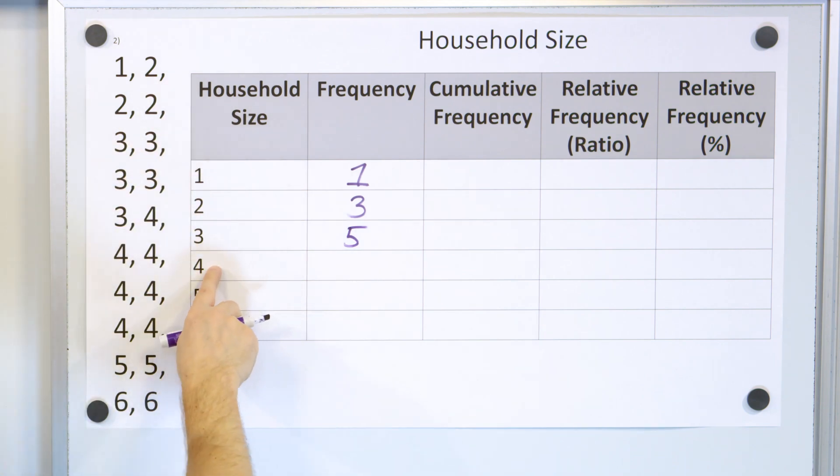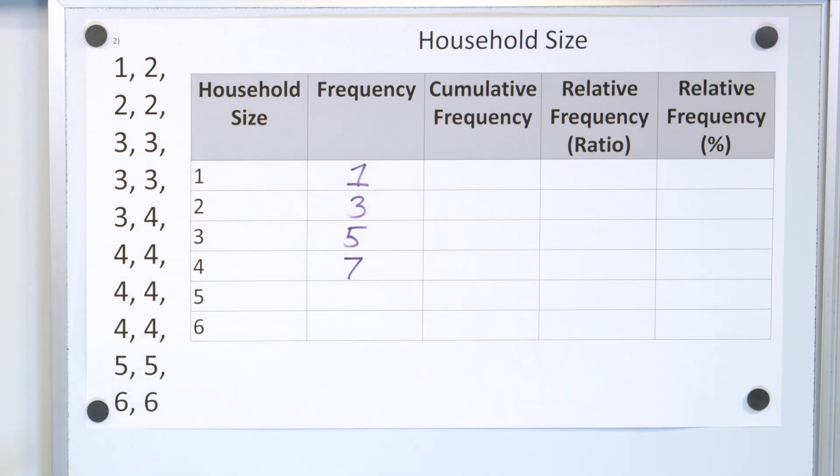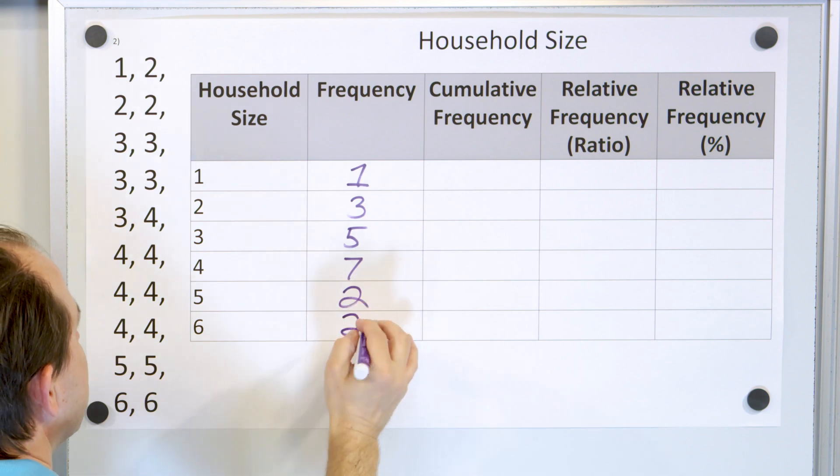How many with a household size of four? One, two, three, four, five, six, seven people have a household size of four. How many have a household size of five? Only two of them. And how many with six? Again, only two of them. So I have one, three, five, seven, two, two.